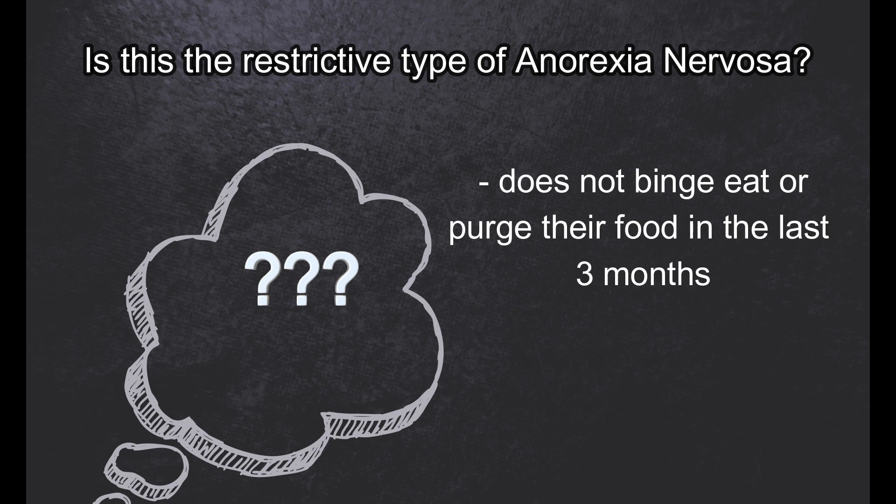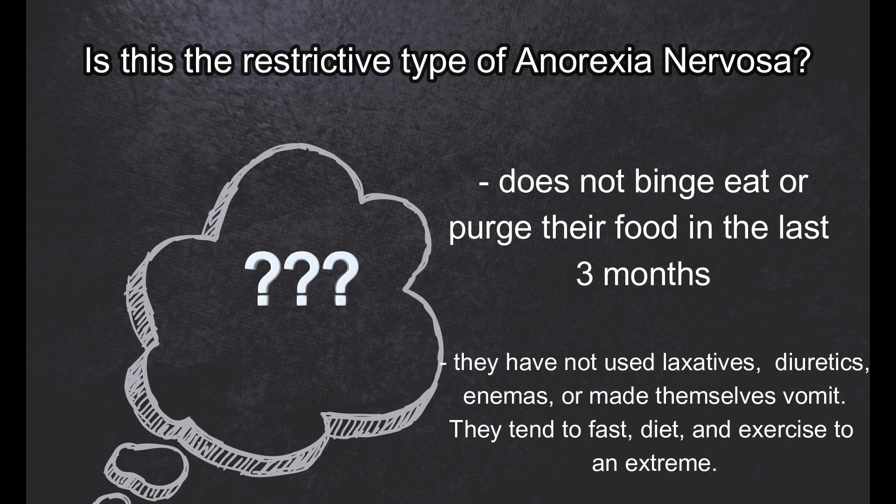The restrictive type is when the person does not binge eat or purge their food within the last 3 months. They have not used laxatives, diuretics, or enemas, and have not made themselves vomit. Those with the restrictive type tend to fast, diet, and exercise to an extreme.